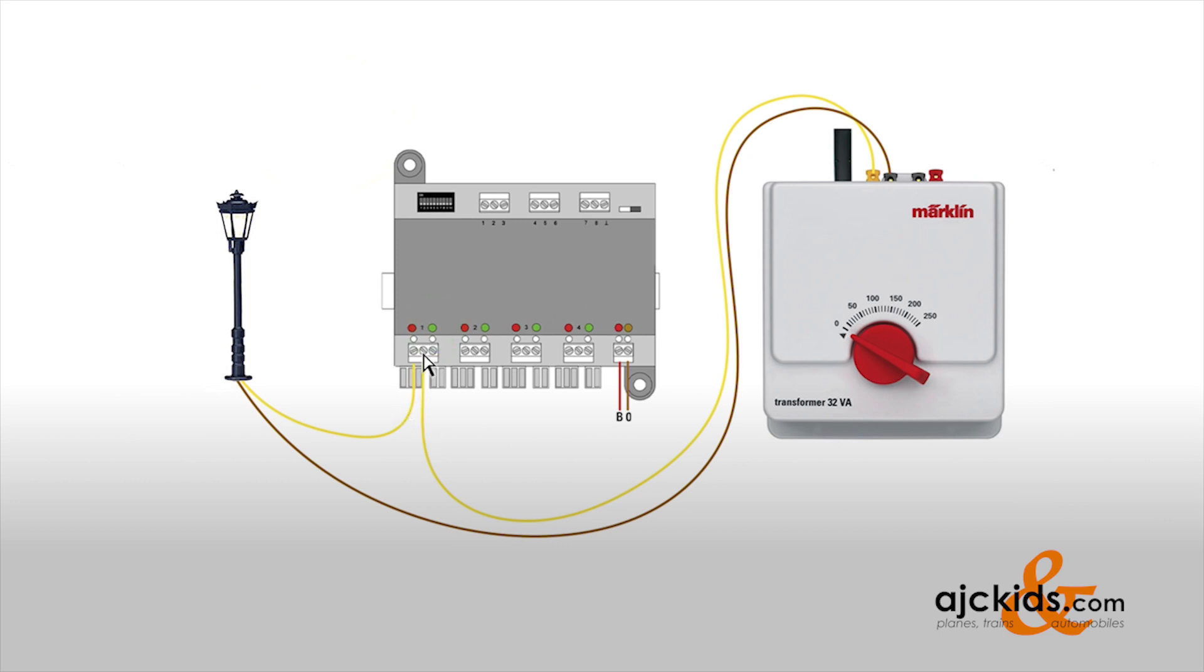Now we're only using this first port. So what we can do is we can add a second light in this example, run the brown back to the transformer. And by the way, these two browns are electrically connected. So it doesn't really matter if I put it here or on this port. And now I'm going to run a second yellow wire from the green port of the decoder to the light.